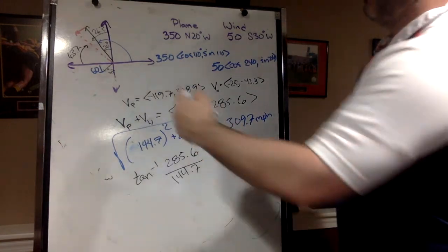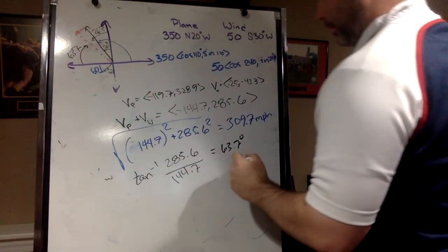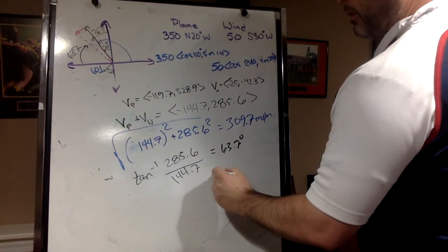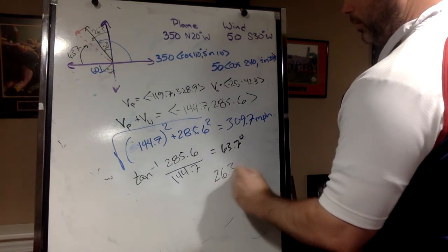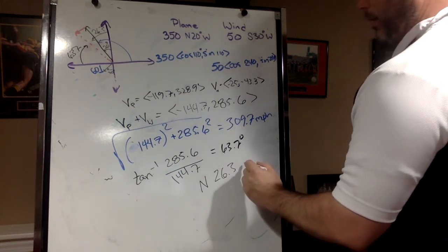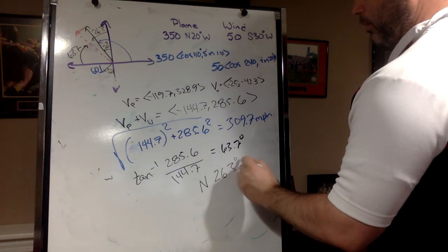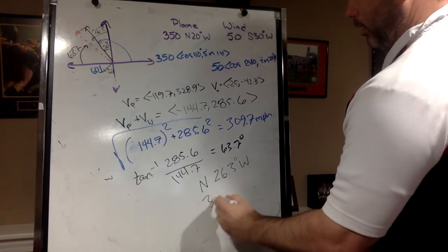So from north I'm going west, so I have 26.3. So that's north 26.3 degrees west to go along with my speed.